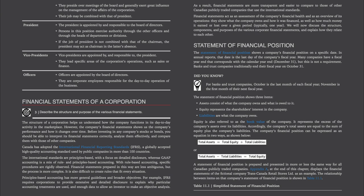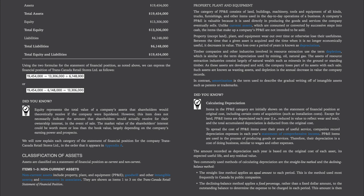A statement of financial position is prepared and presented in more or less the same way for all Canadian publicly traded companies. Appendix A at the end of this chapter displays the financial statements of the fictional company TransCanada Retail Stores Limited as an example. The relationship between items on that company's statement of financial position is shown in Table 11-1. The total assets are $19,454,000, the total equity is $13,306,000, and the total liabilities is $6,148,000. We can express this as: $19,454,000 = $13,306,000 + $6,148,000, or $19,454,000 − $6,148,000 = $13,306,000.